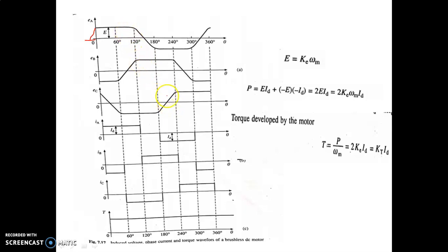These are the waveforms we are going to discuss. In the trapezoidal nature, the rotor uses permanent magnets to produce voltage. The maximum flat-top value spans 120°. So Eb is 120° and Ea is 120°.